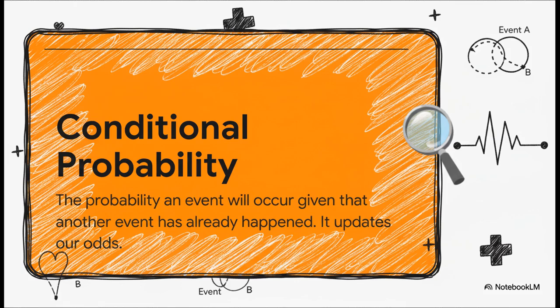This, right here, is the key to everything. It's not about the probability of something happening out of the blue. It's the probability of it happening given that we already know something else is true. It's all about how the odds change when we get new information, like a test result.